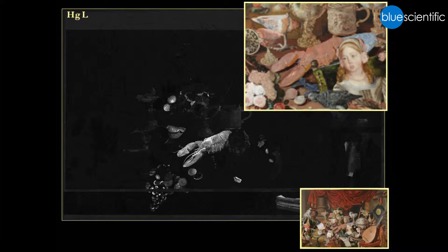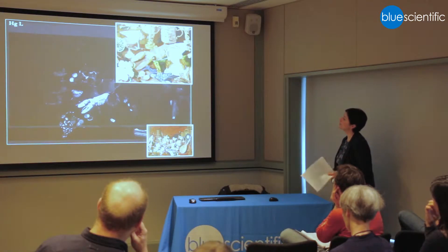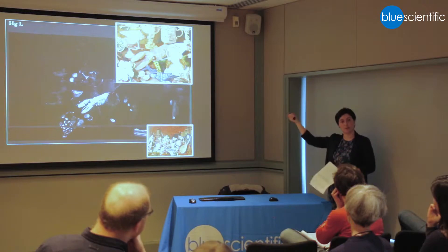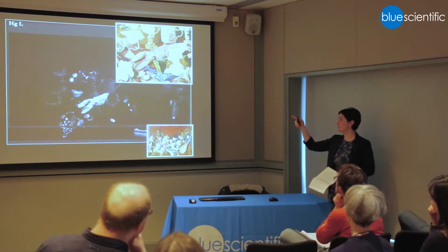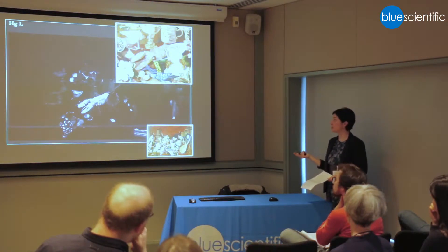The mercury map is interesting because it proves that many areas which currently appear very pale, almost bleached out, must have been bright red. The lobster is a case in point — it's not as red as it should be. There must have been some kind of degradation process going on, and this is something one could investigate further, because all that mercury suggests it would have been a lot redder, which also makes sense visually.